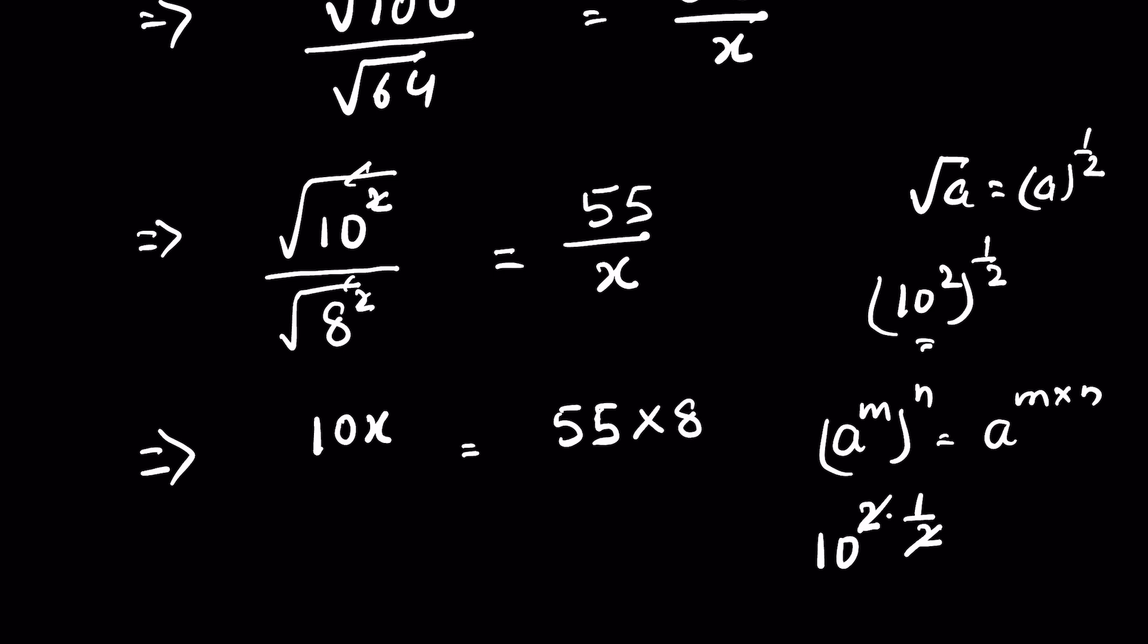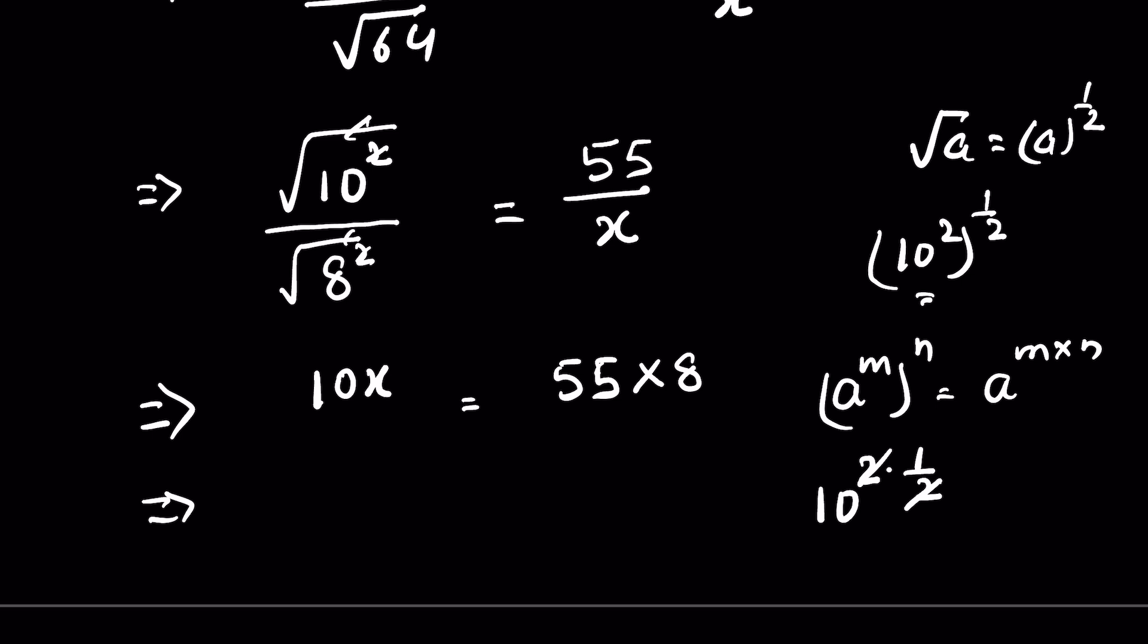Why? Because when you change the side, division becomes multiplication. So 8 was here in division, 10 was divided by 8. Now it is multiplied to 55. Now 10x is equal to 55 times 8.